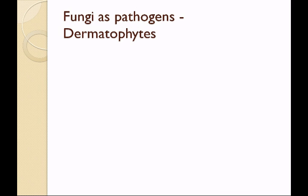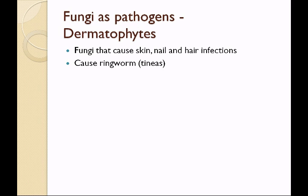Fungi can also be pathogenic. Those that affect the skin or the epidermis are the dermatophytes — they affect the skin, the nail, and the hair. They cause something known as ringworm. It's called ringworm but it has nothing to do with worms. Fungi grow in a circle — if you look at that fungus in Oregon and walked around the periphery, it would be roughly circular. Perhaps you've seen a fairy ring in the woods — a circle of mushrooms.